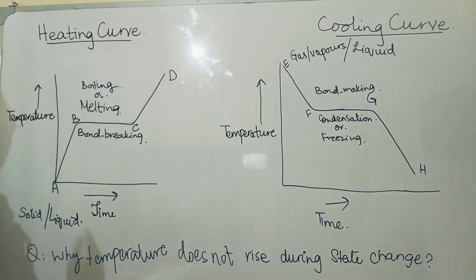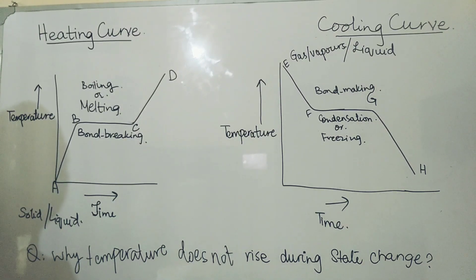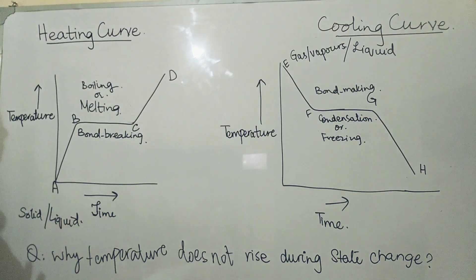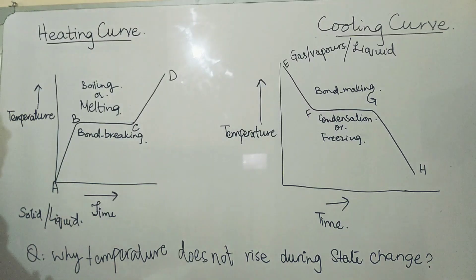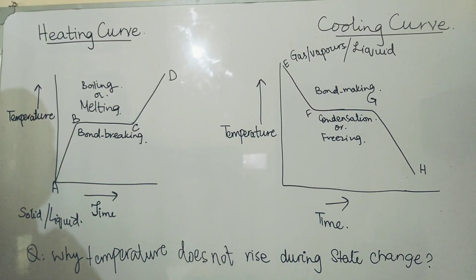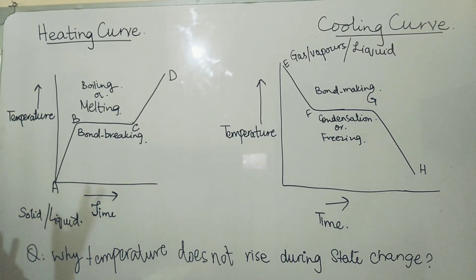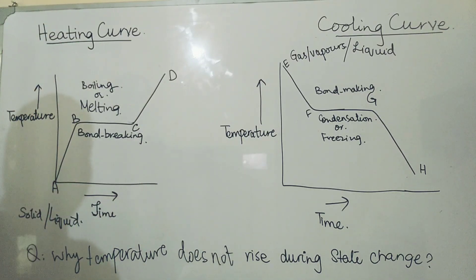If we are cooling a liquid, then both states — solid and liquid — will be observed from F to G. At G, all the substance has changed: if we are cooling a gas, all the substance has changed to a liquid, and if we have taken a liquid, then all the substance has changed to a solid. So from G to H, the temperature of the changed state now starts decreasing.